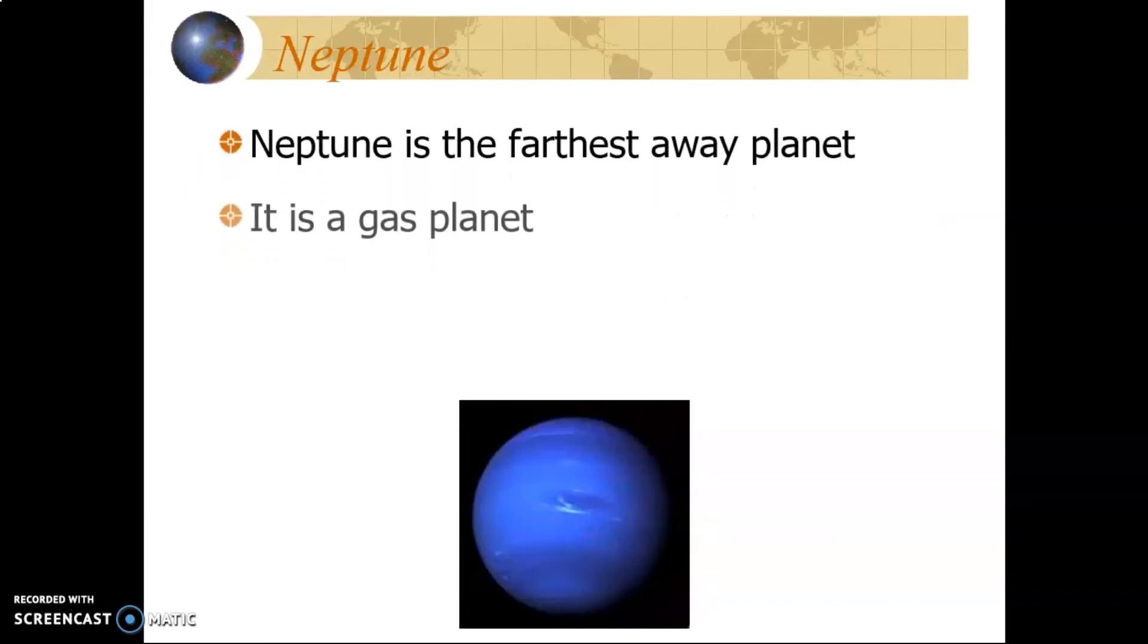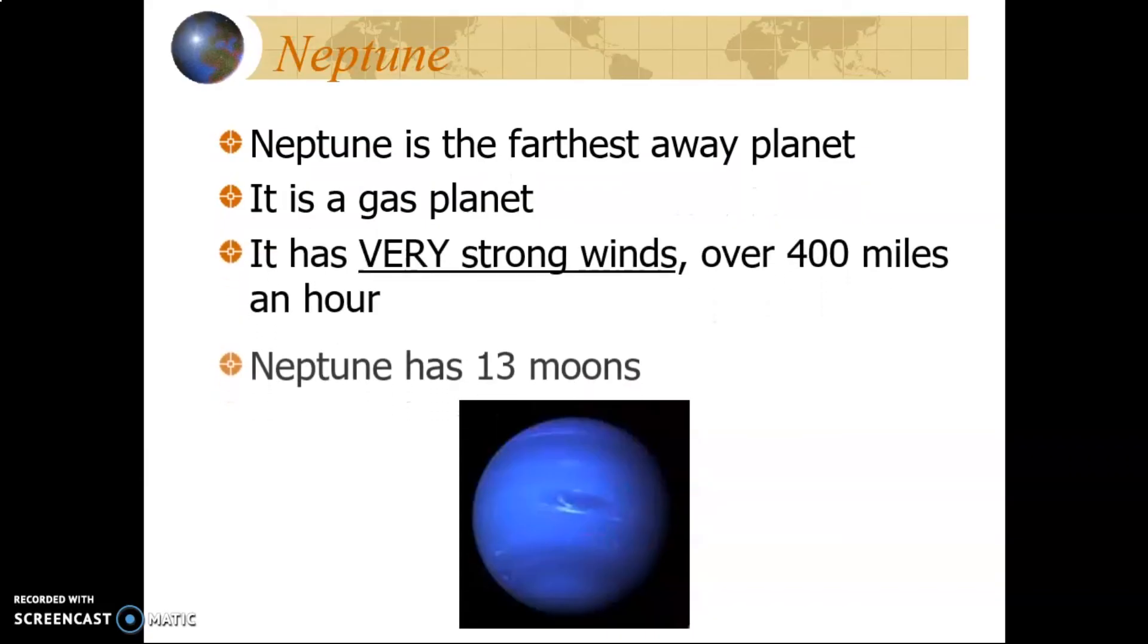Neptune is the farthest away planet, with 13 moons and very strong winds, reaching over 400 miles per hour.